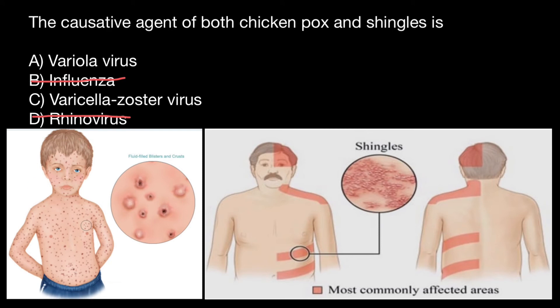If you have shingles, direct contact with the fluid from your rash blisters can spread VZV to people who have never had chickenpox or never received the chickenpox vaccine. If they get infected, they will develop chickenpox, not shingles — though they could then develop shingles later in their life. The risk of spreading varicella zoster virus is low if you cover the shingles rash. People with shingles cannot spread the virus before their rash blisters appear or after the rash crusts. People with chickenpox are more likely to spread VZV than people with shingles.